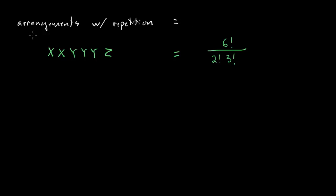So in our formula, we can say for arrangements with repetition, you take the total number of items factorial and divide by the factorials of the repeats, of the repeated items.